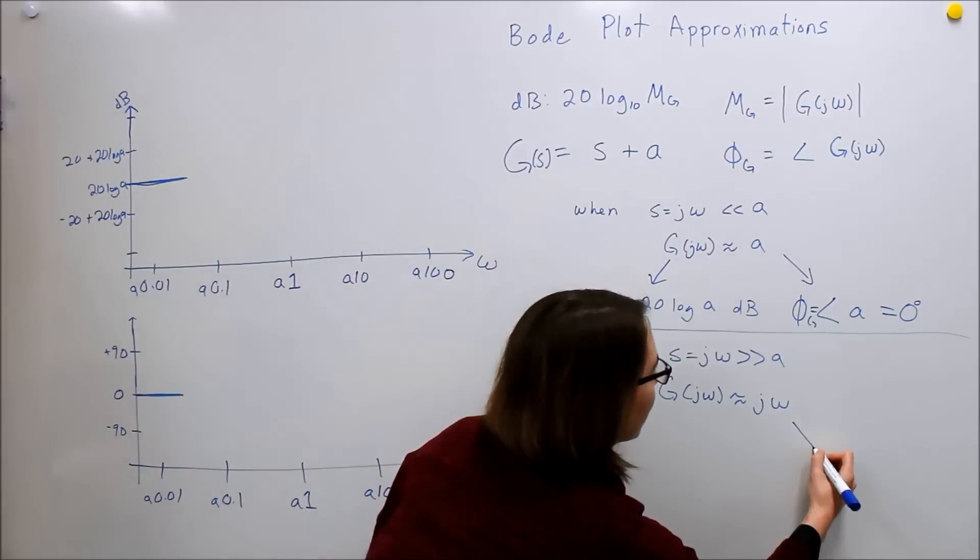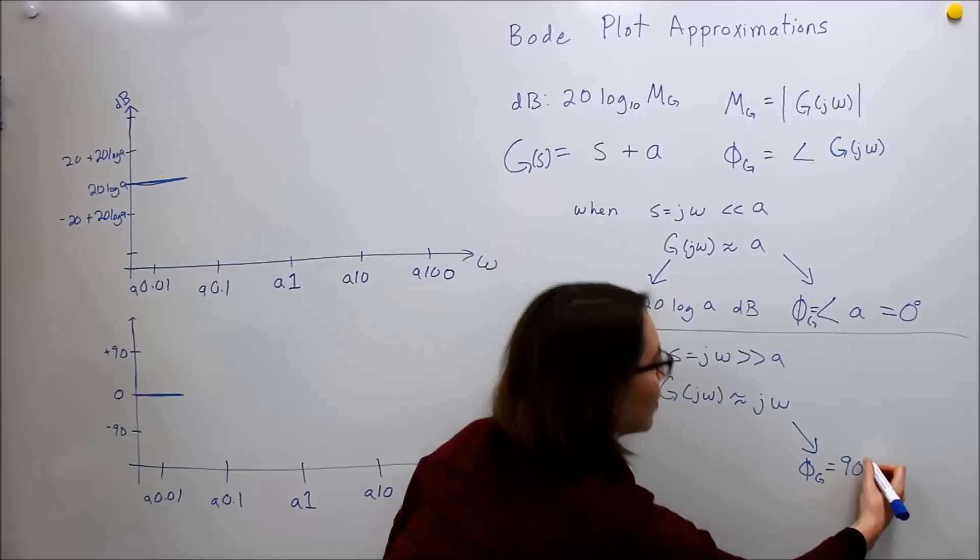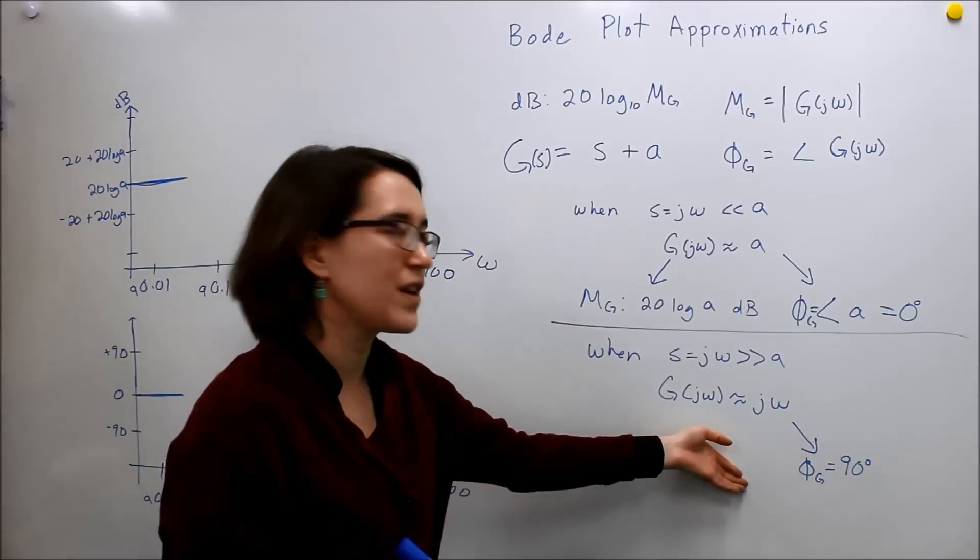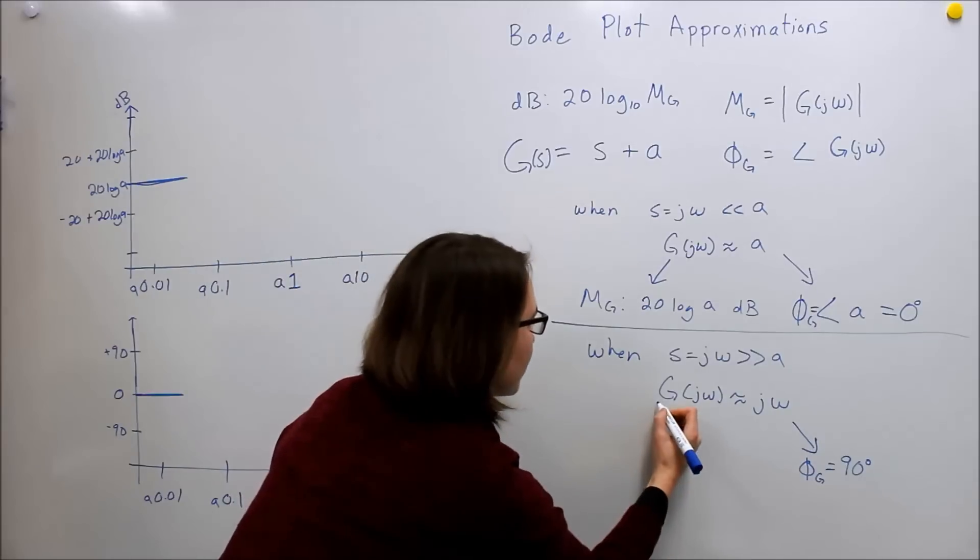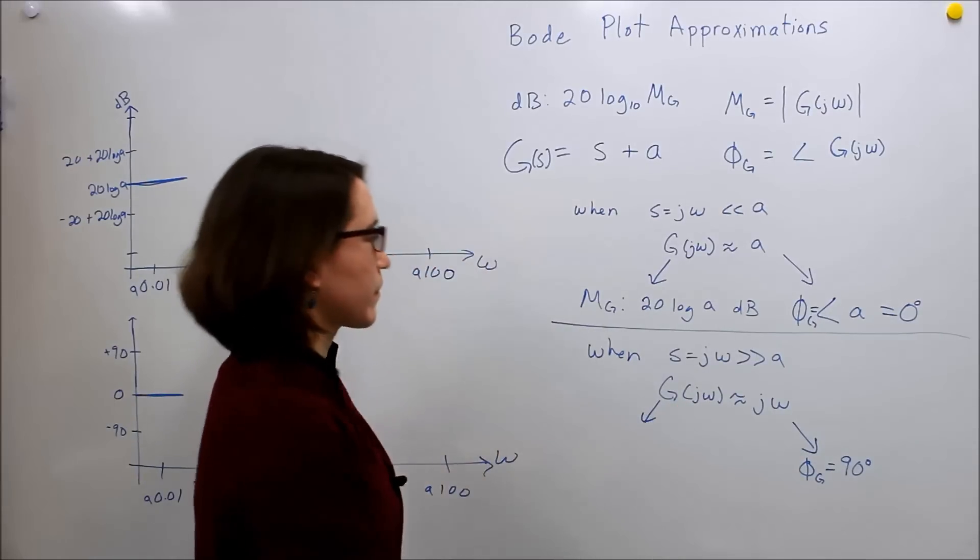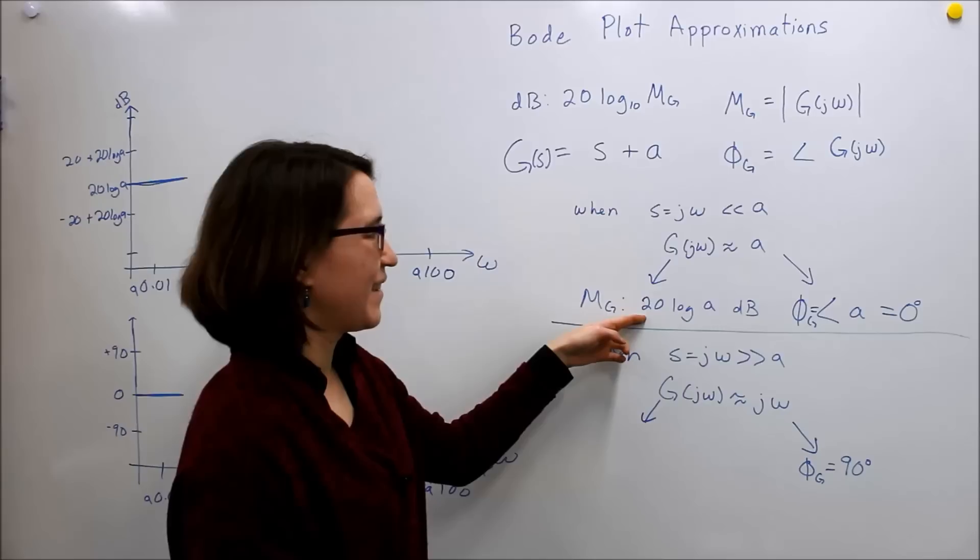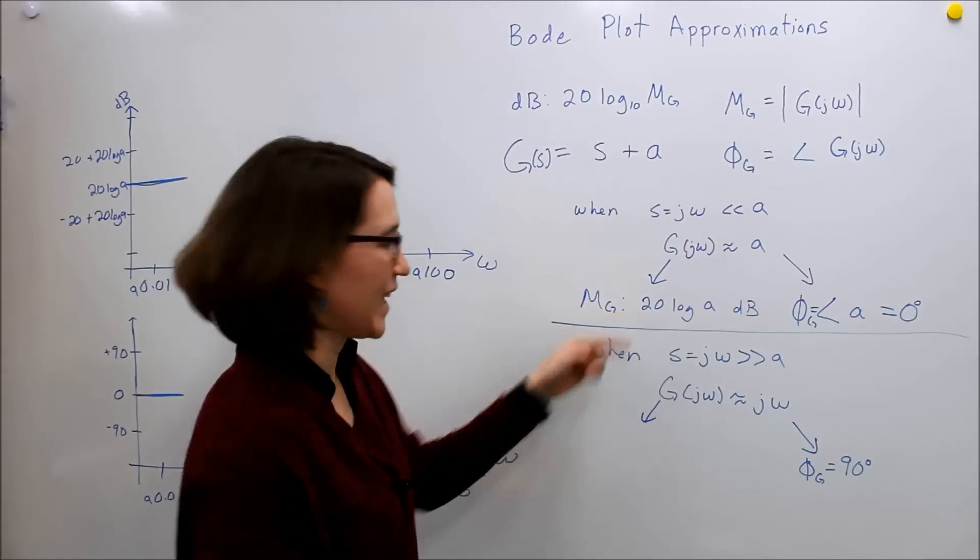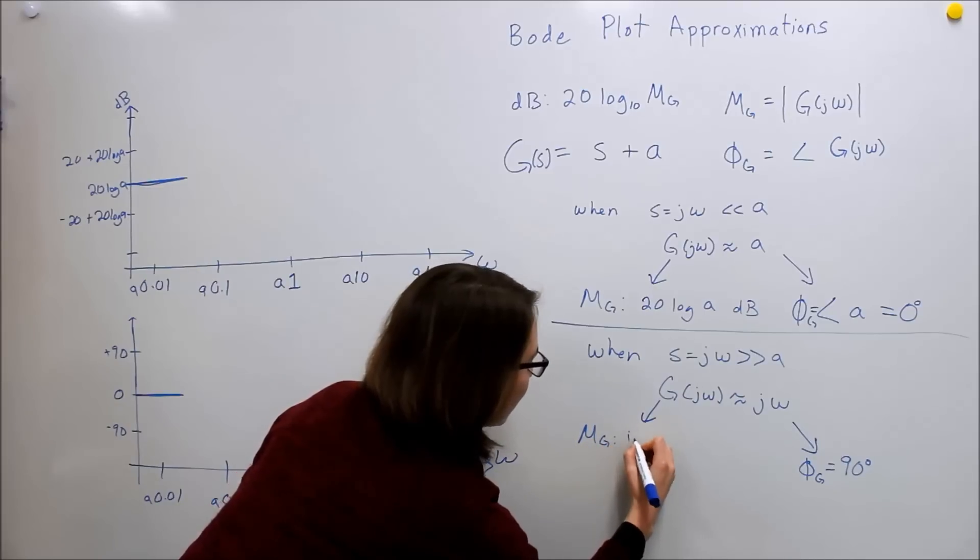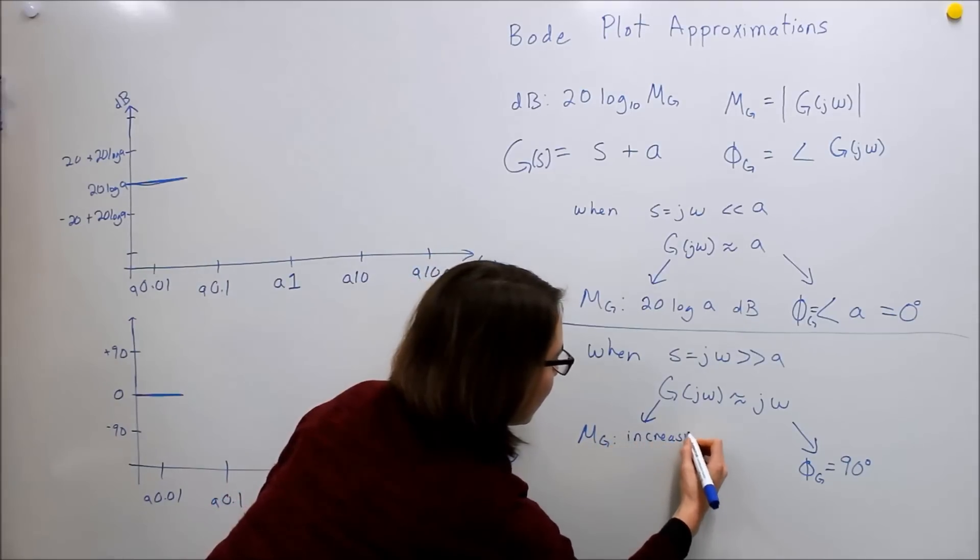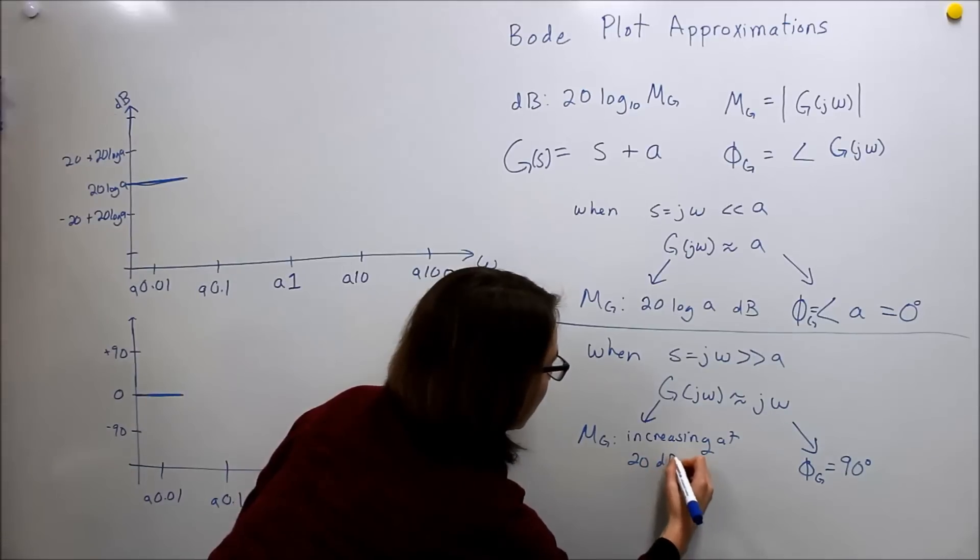So we know that, I'm going to do the angle first, theta g is equal to positive 90. So we know that that's going to, as we go to infinity, we're going to go towards that angle, that phase. And the magnitude is going to be increasing, before, remember, it was increasing at 20 dB per decade.